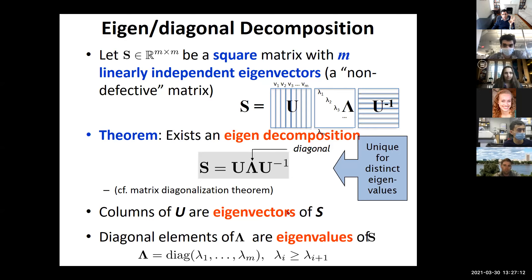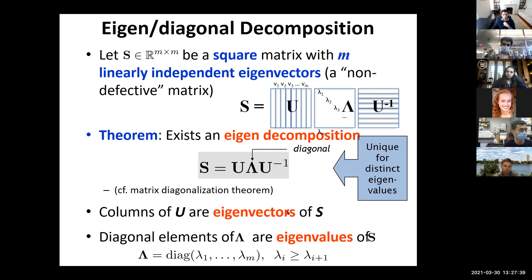For square symmetric matrices, this works well, but for general non-square matrices we must resort to singular value decomposition. For non-symmetric, non-square matrices, a different type of factorization is needed. Singular value decomposition asks: what are the eigenvectors of my genes, what are the eigenvectors of my conditions, and what are the combinations that best explain the data? Instead of decomposing in one dimensionality only, you ask about one dimension versus another dimension.